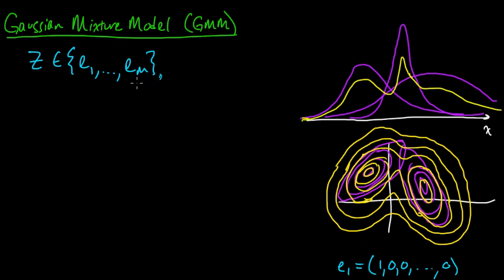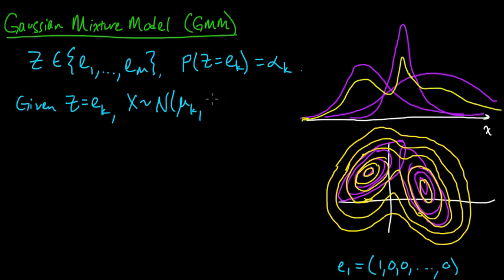So z is a vector, it's one of these vectors. And let's say that z equals ek with probability alpha k. So the alpha k's are some numbers that it's a PMF on this finite set here. And then, given z, let's say given that z equals ek,